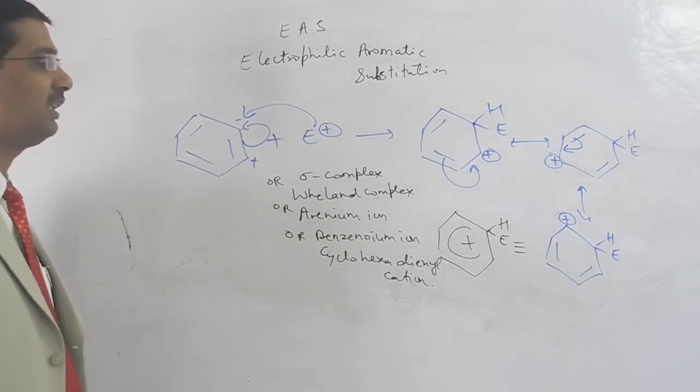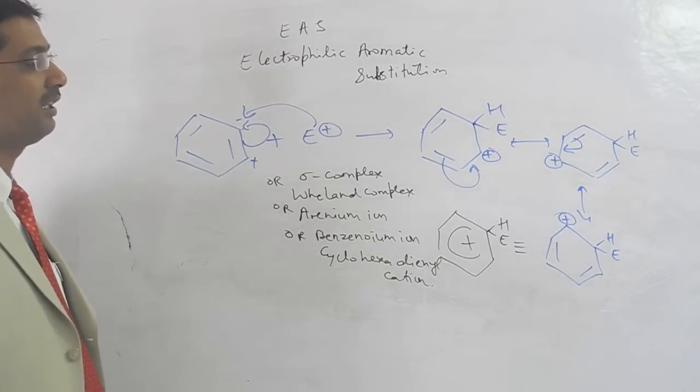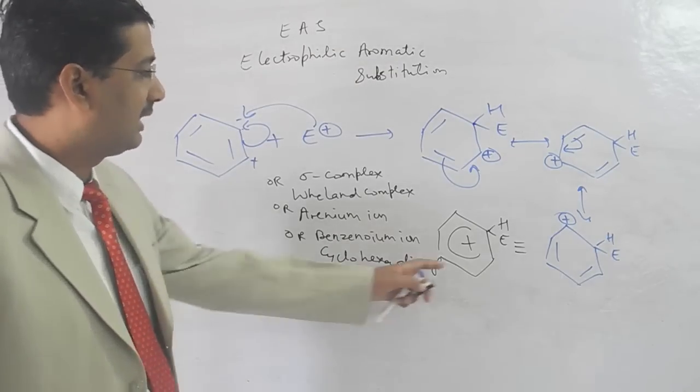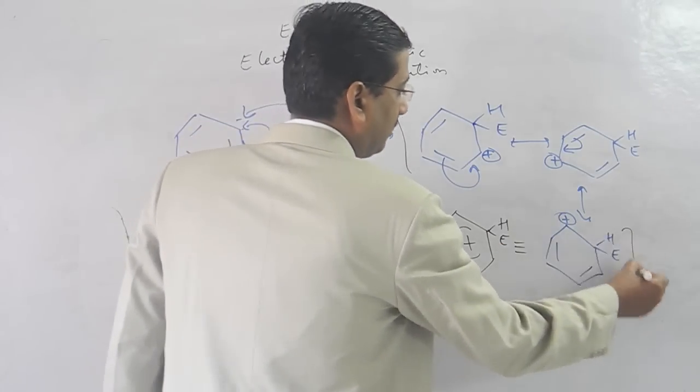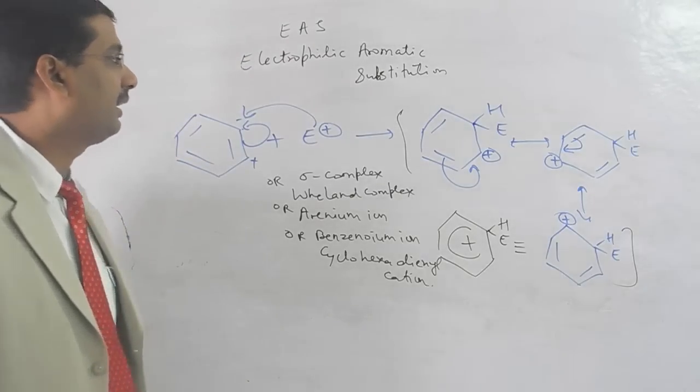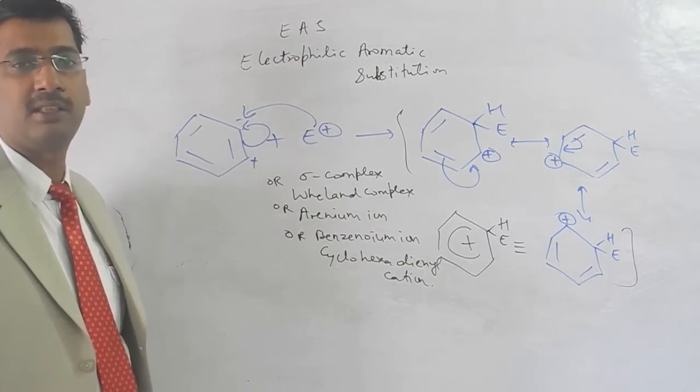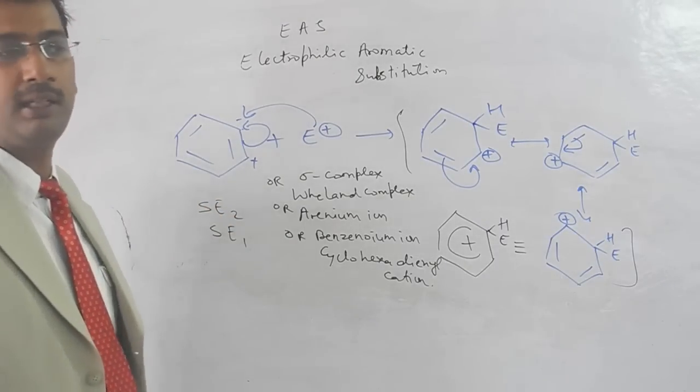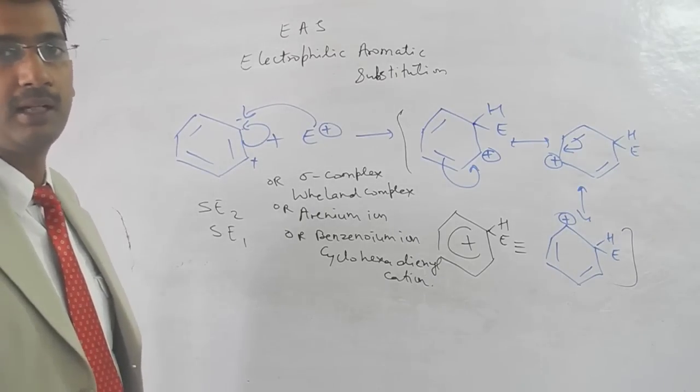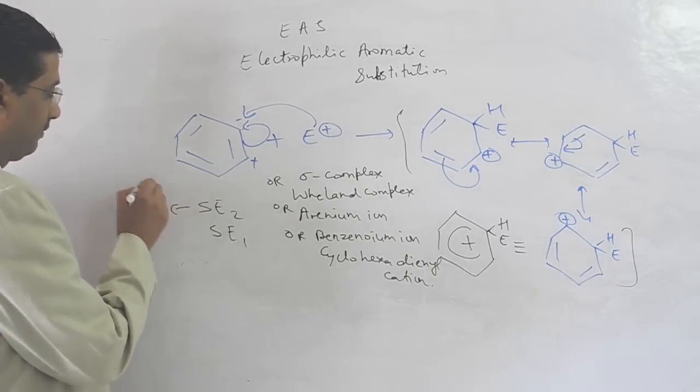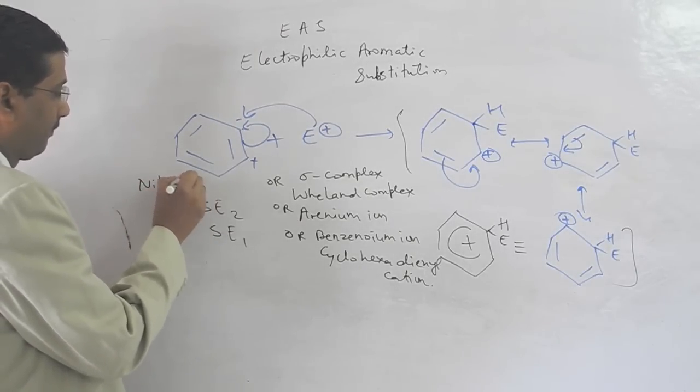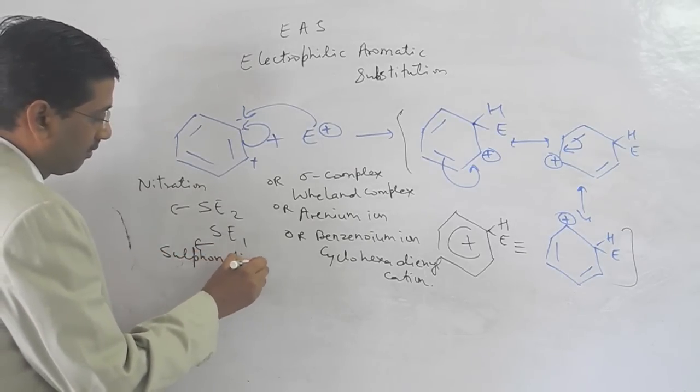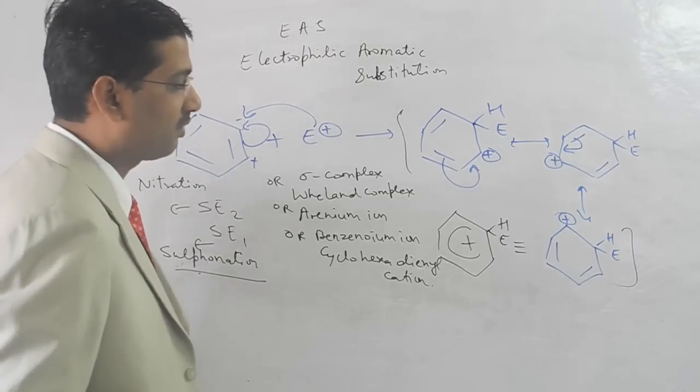Now, we will discuss nitration, sulfonation, Friedel-Crafts alkylation, and Friedel-Crafts acylation. These are all the resonance structures. This is the reaction. We will discuss this in terms of nitration.